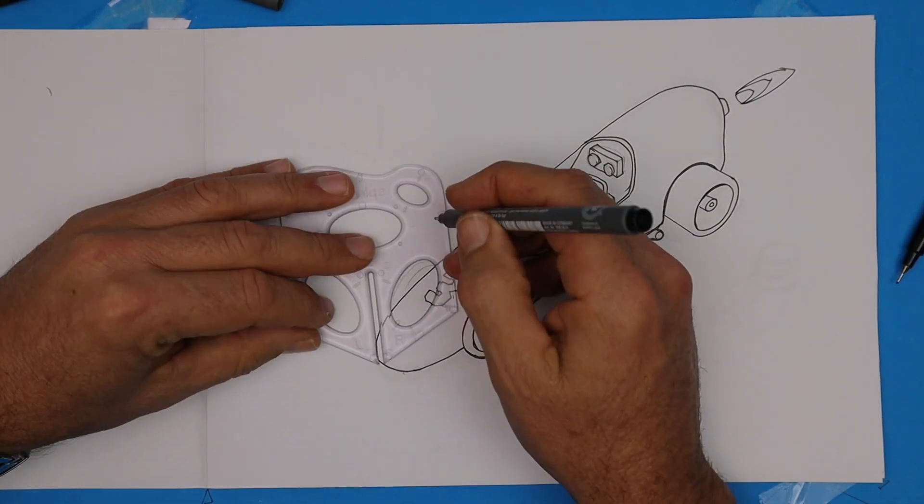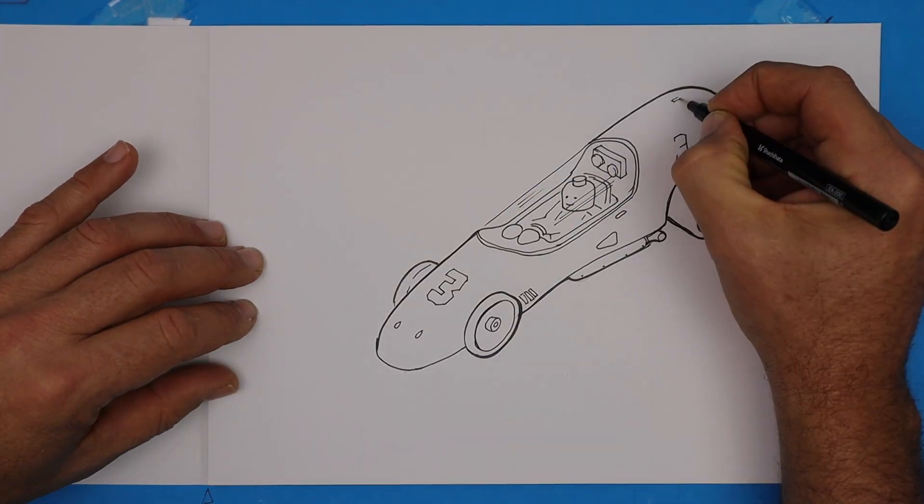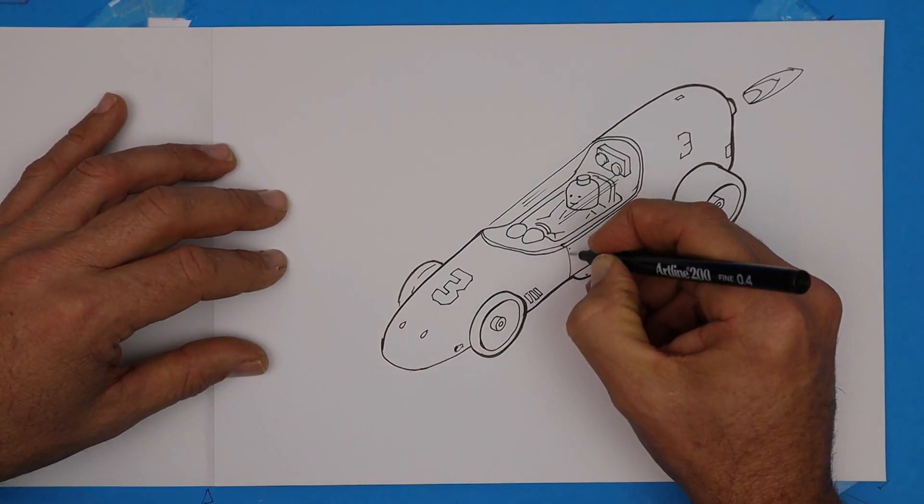I'm using the splat where I can to trace the outsides of the wheels. I would use a long flexi curve for those really long curves.